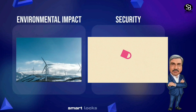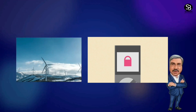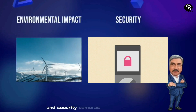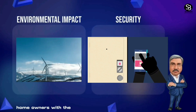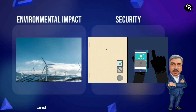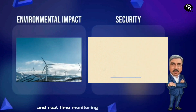Security: Advanced security is a crucial attribute of smart objects. Smart locks, video doorbells, and security cameras furnish homeowners with sophisticated security features and real-time monitoring capabilities.